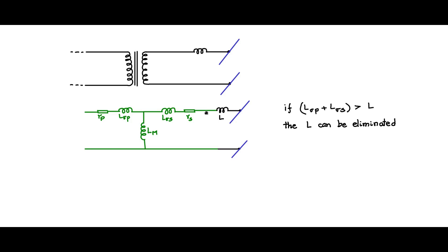To find the leakage inductance as seen from the secondary side, short the primary terminals 1p and 2p and measure from the secondary terminals. With Rs and Rp negligible, Lσp appears in parallel with Lm; since Lm's impedance is far greater, Lσp dominates, and the measurement yields Lσp plus Lσs in series — the equivalent leakage inductance as seen from the secondary. You can measure from either side, depending on where you wish to replace the inductance.